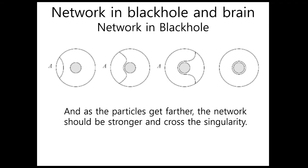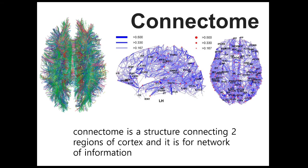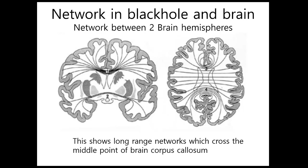In the brain, the network happens in white matter. The region connecting two regular points of the surface is the corpus callosum and telecommissure, commissure minor, and process minor and major, which connect two hemispheres of the brain. The structure for transferring the network is commissure fibers and association fibers, which are fiber structures connecting two regions of the surface located in white matter, like strings. The connectome is a structure connecting two regions of the cortex for network of information. There are shorter association fibers for short-range networks and long-range networks close to the corpus callosum.